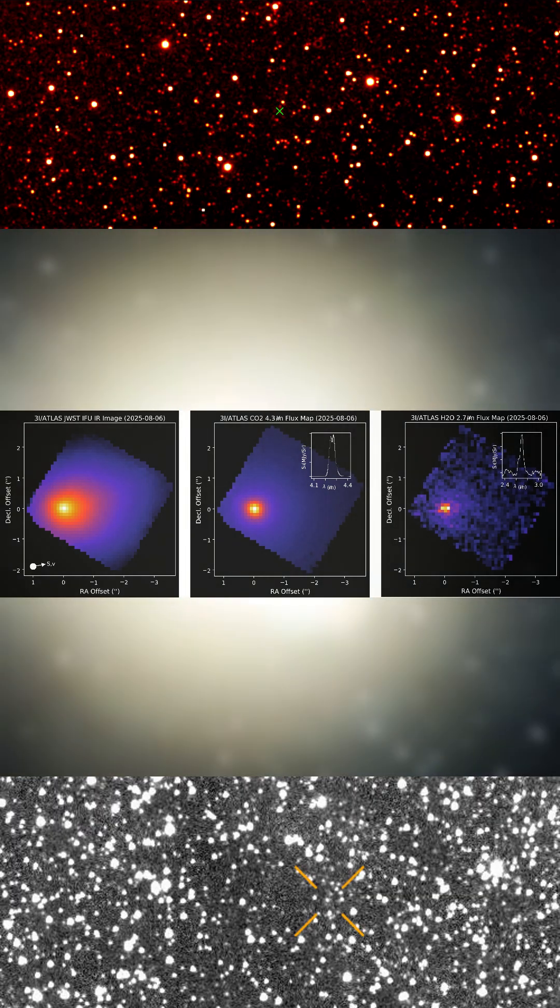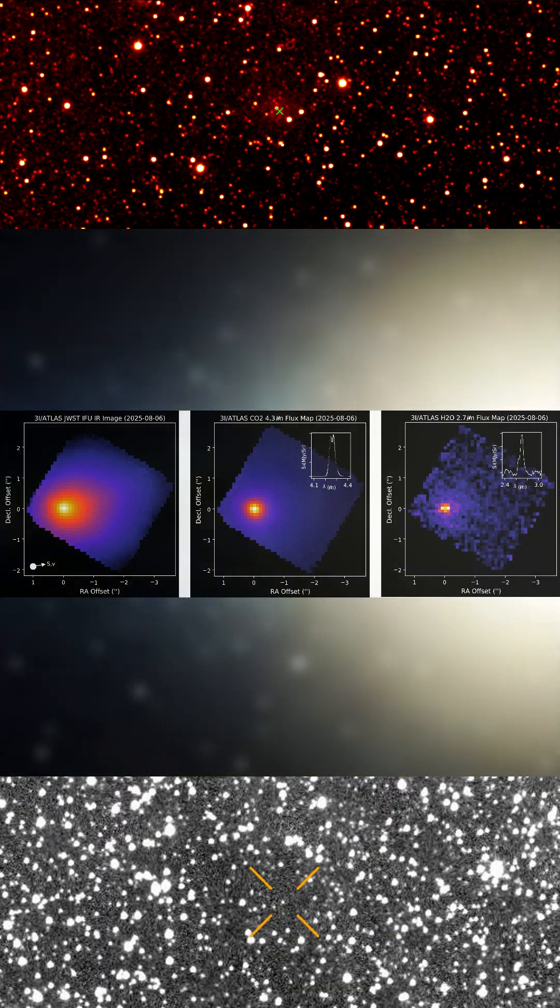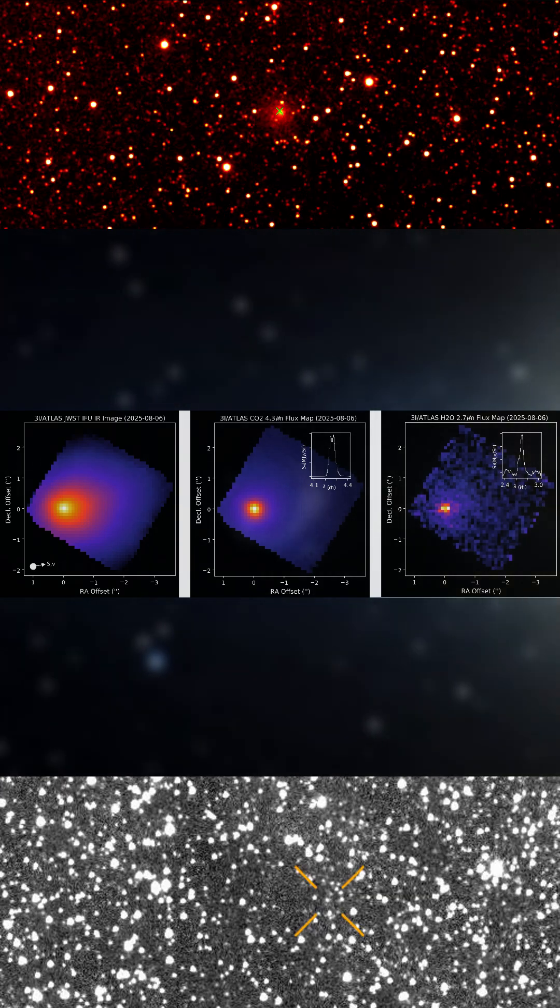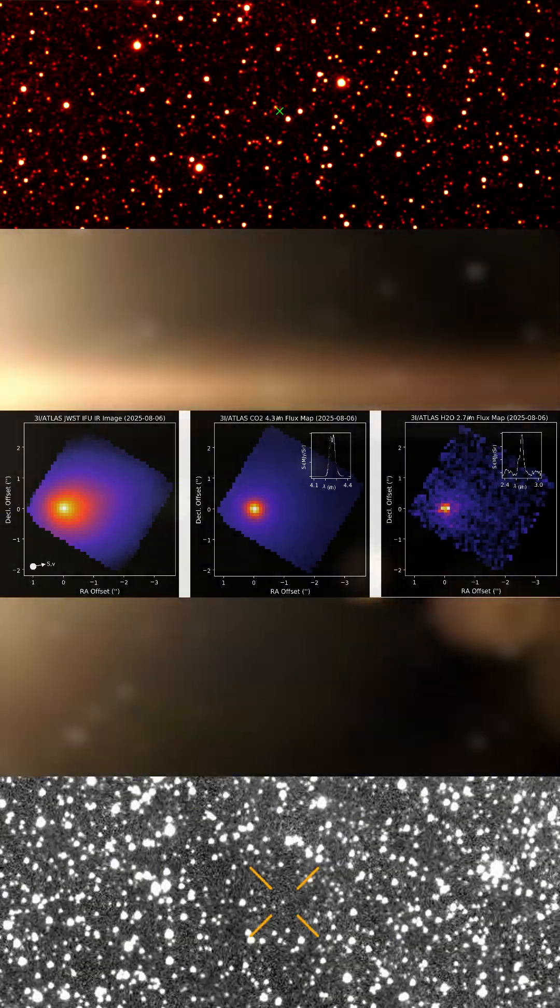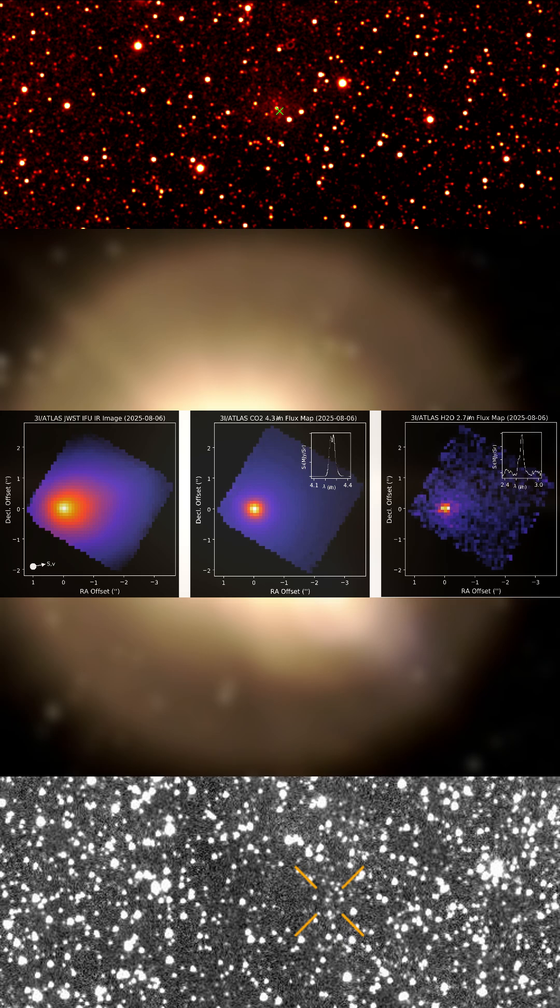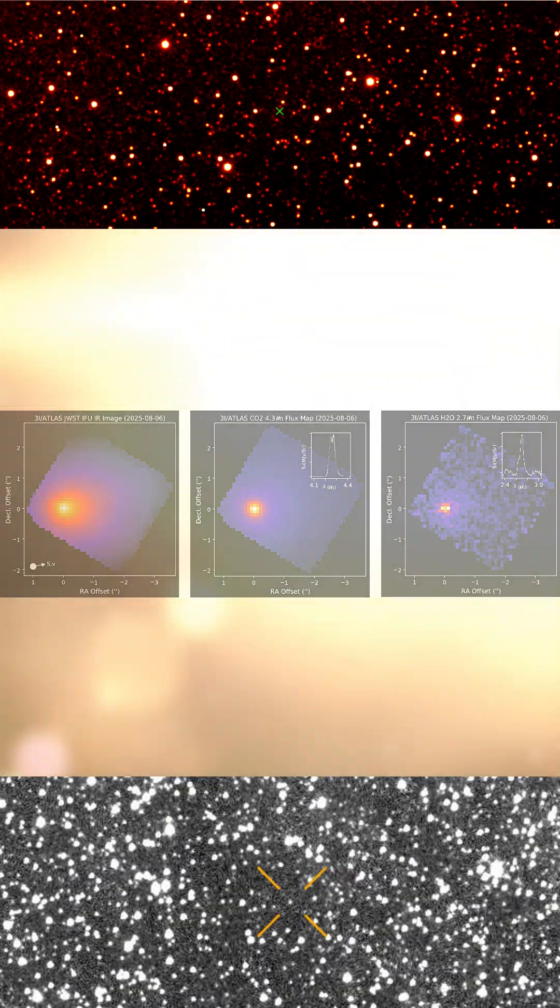With these measurements, Webb has confirmed that C/2023 A3 Atlas is chemically and structurally distinct from comets in the solar system. It stands out as the most unusual interstellar visitor studied so far.